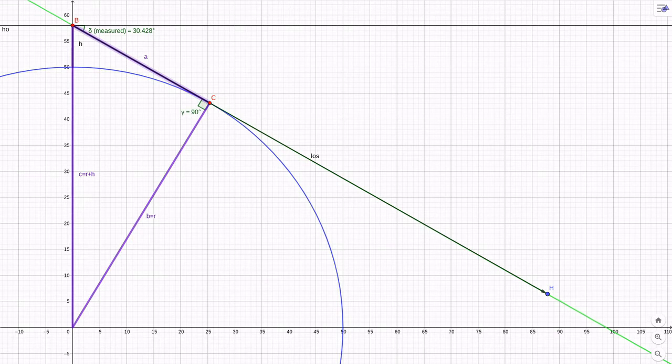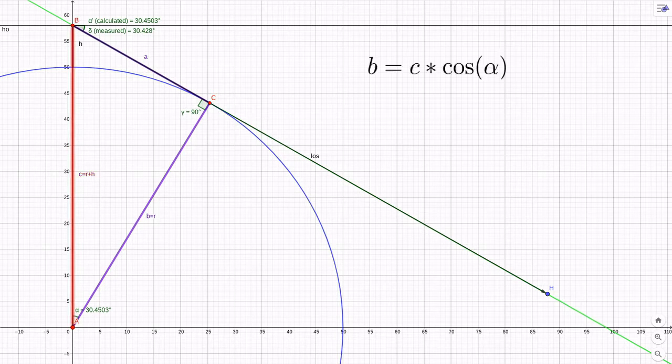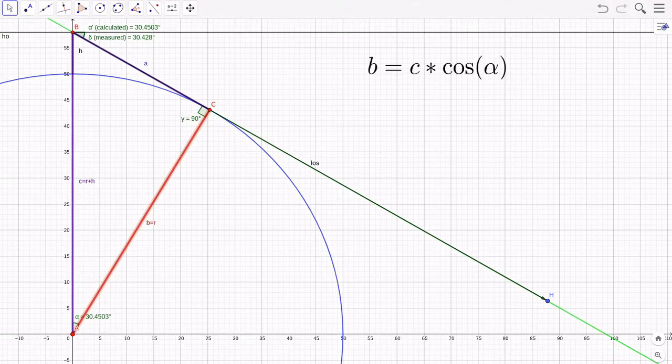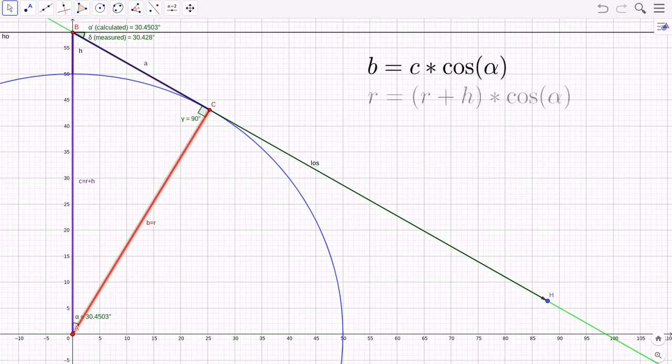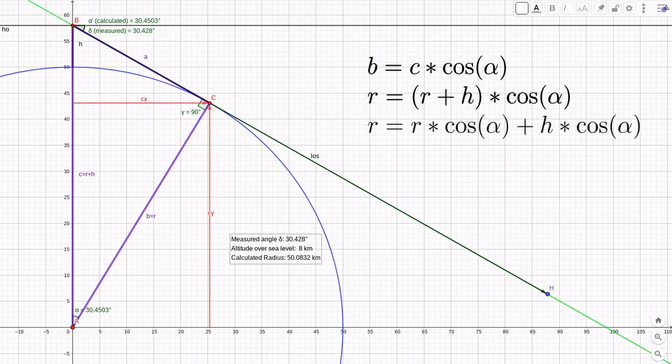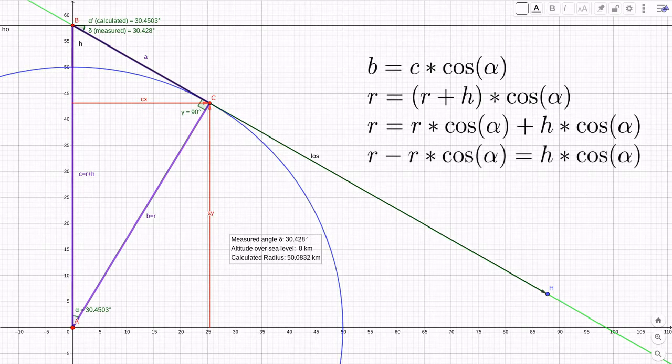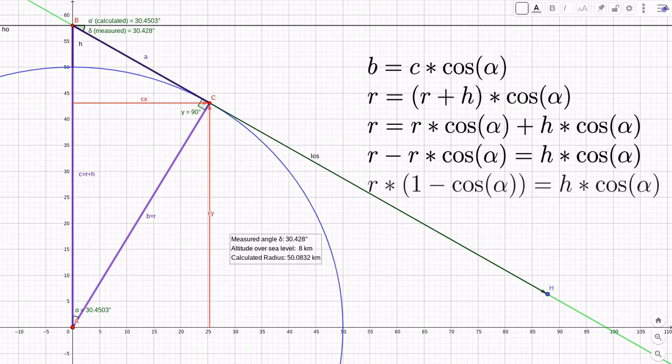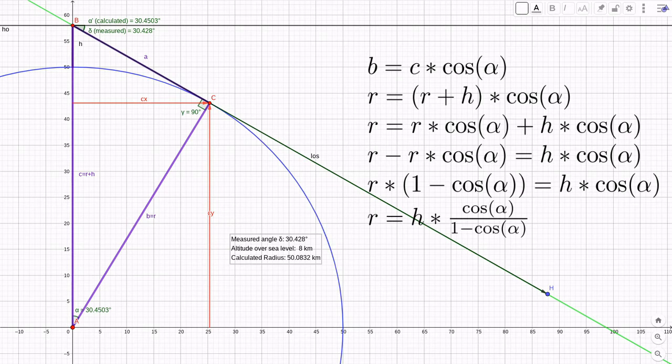We can also see immediately from this drawing that the angle alpha at point A is equal to the angle delta that we measure with our theodolite. Because C is the hypotenuse of ABC, B must be equal to C times cosine alpha. B is also equal to the radius we want to measure, R. So R must be R plus our mountain's altitude H times cosine alpha. Now we can distribute cosine alpha and isolate R. The radius we're looking for is our elevation over sea level times cosine alpha divided by 1 minus cosine alpha.